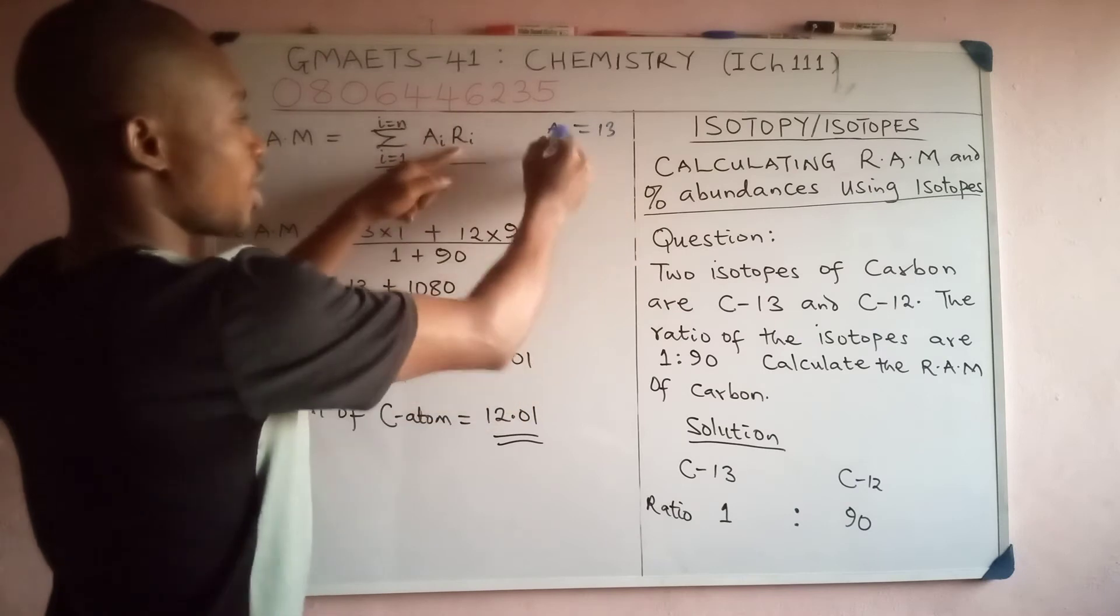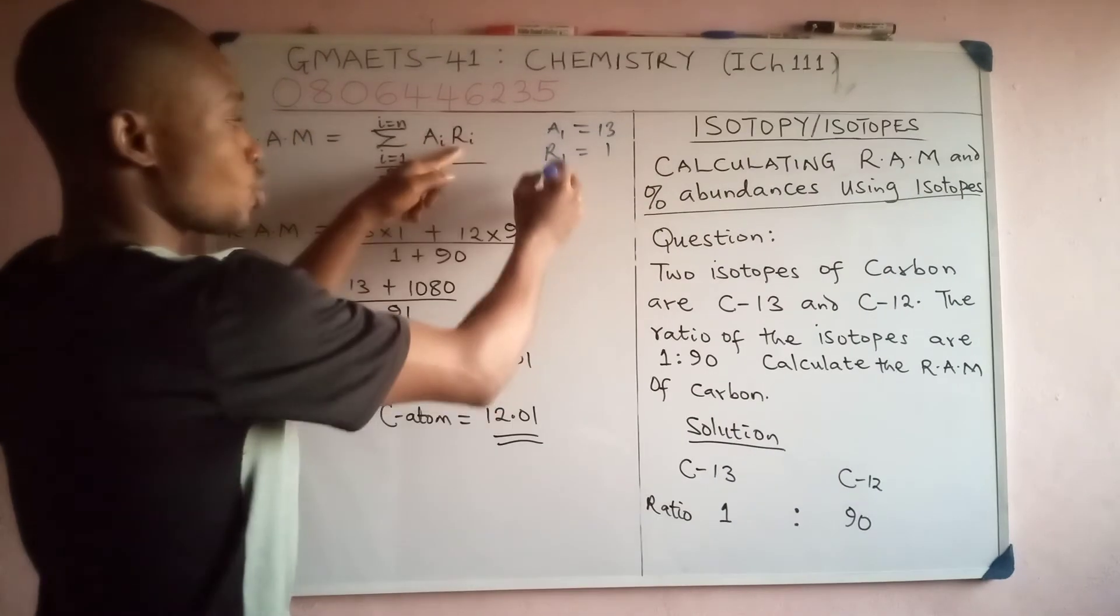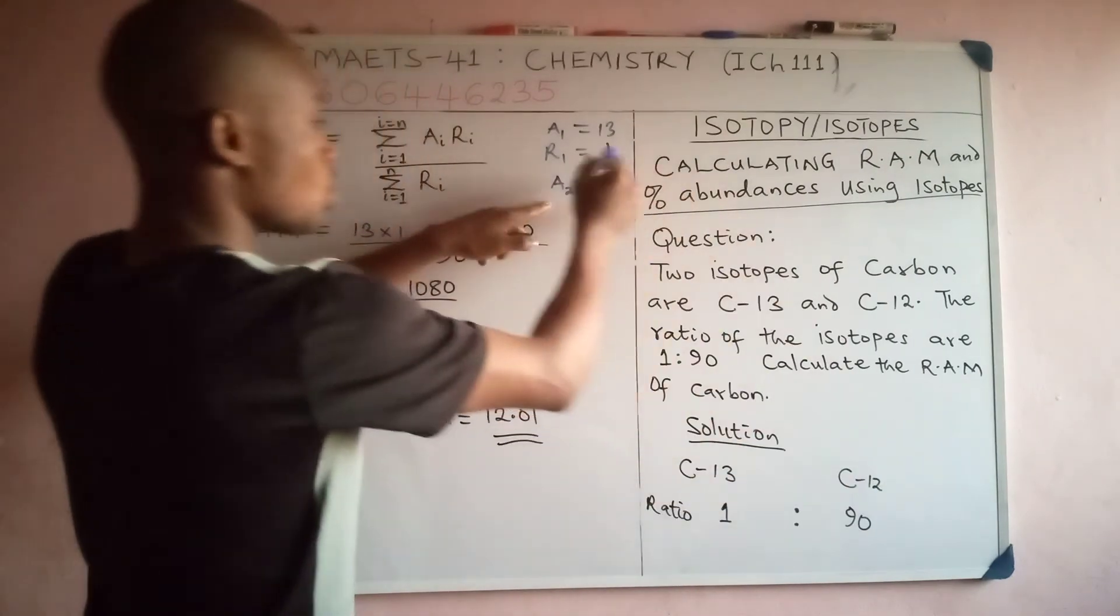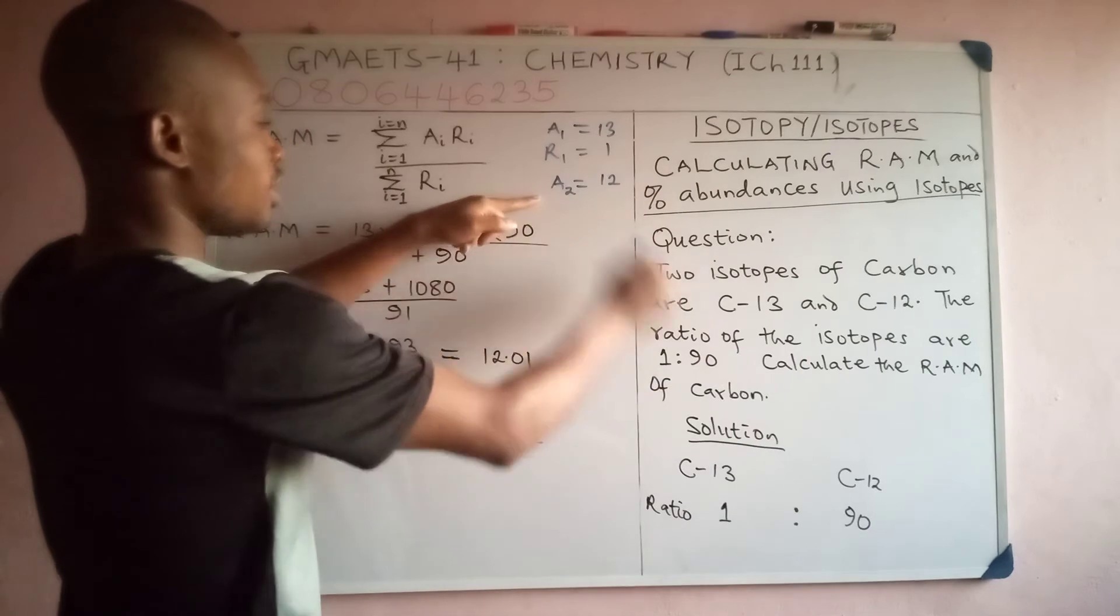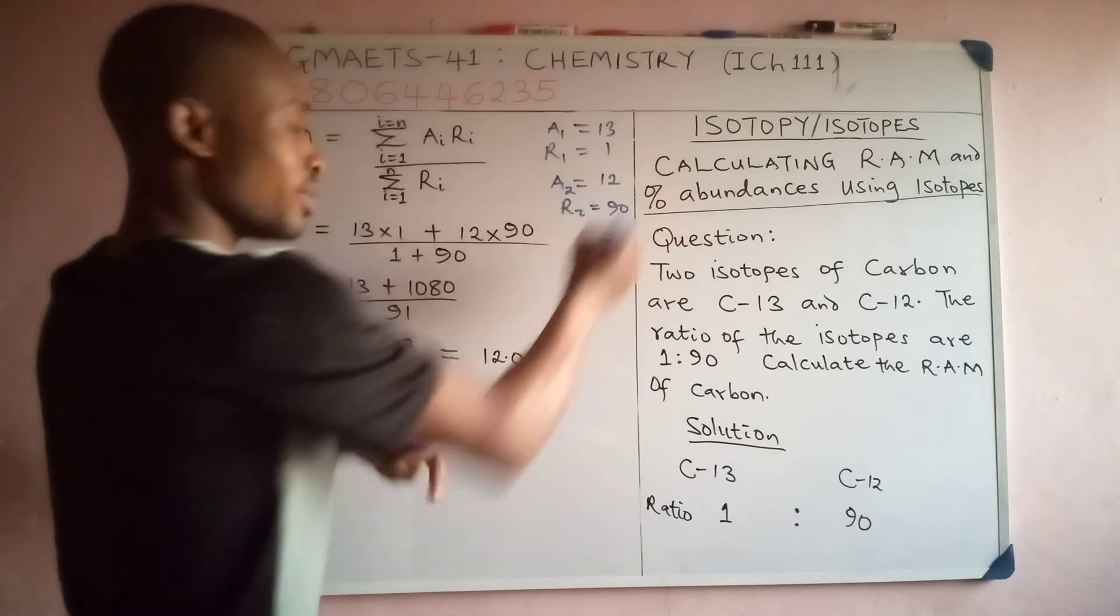Then also we have a2, the mass number of carbon-12 is 12, and then the ratio R2 is 90. Good.